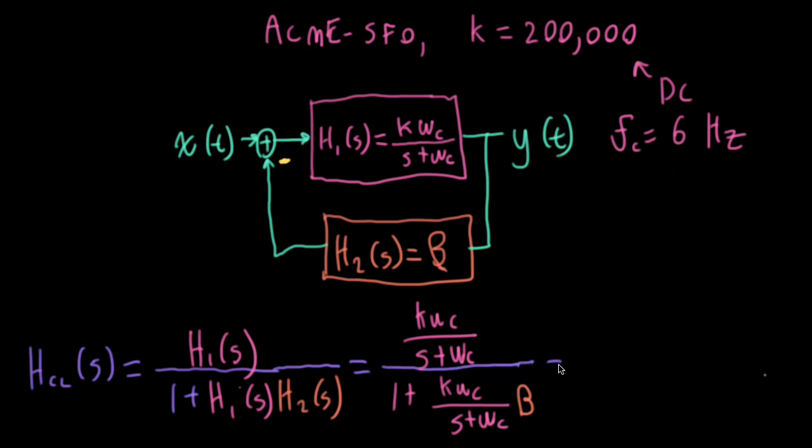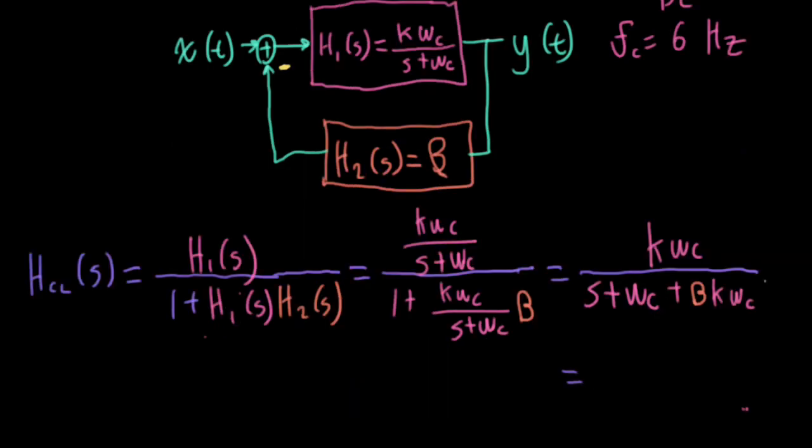And then clearing the fraction, I'll have K Omega C in the numerator. Then S plus Omega C replaces 1, and then I'll have beta K Omega C, giving us K Omega C all over S plus 1 plus beta K times Omega C.